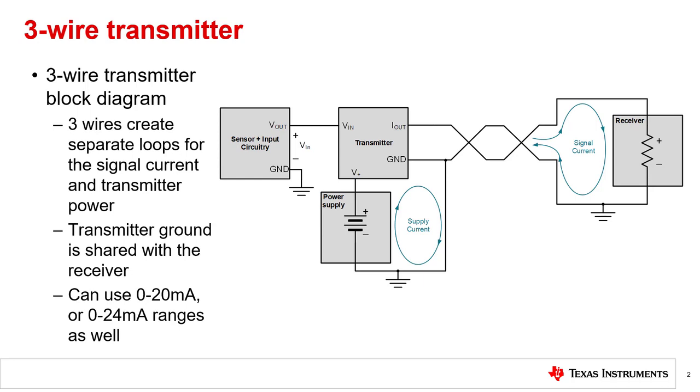In a previous video, we introduced the following characteristics of a 3-wire 4 to 20 milliamp transmitter. A 3-wire transmitter uses two transmission wires to connect the transmitter output to the load and the receiver's ground to the transmitter's ground. Typically, the third wire in this 3-wire transmitter connects the local supply to the device. But there are applications where the transmitter uses the same supply as the receiver.